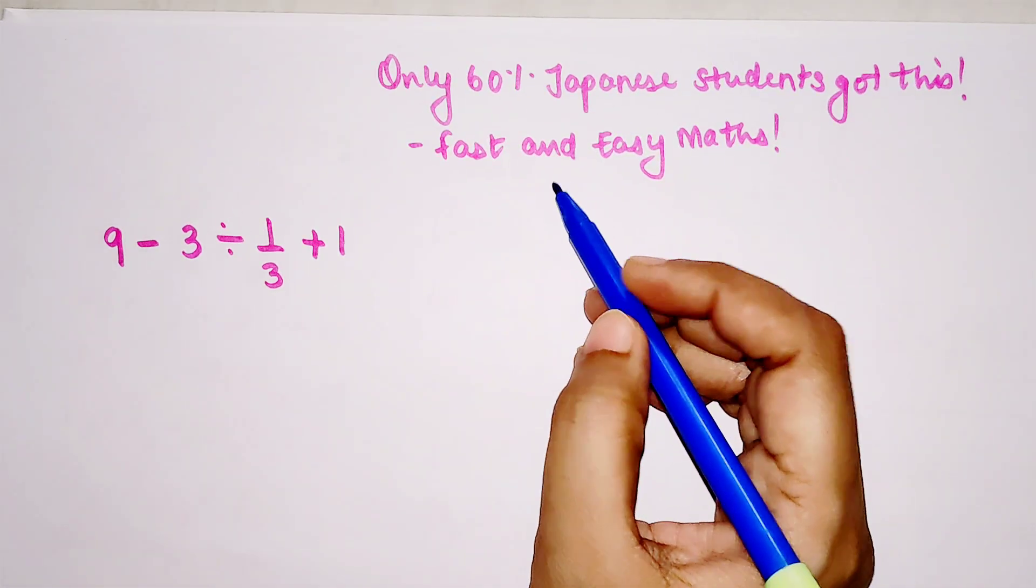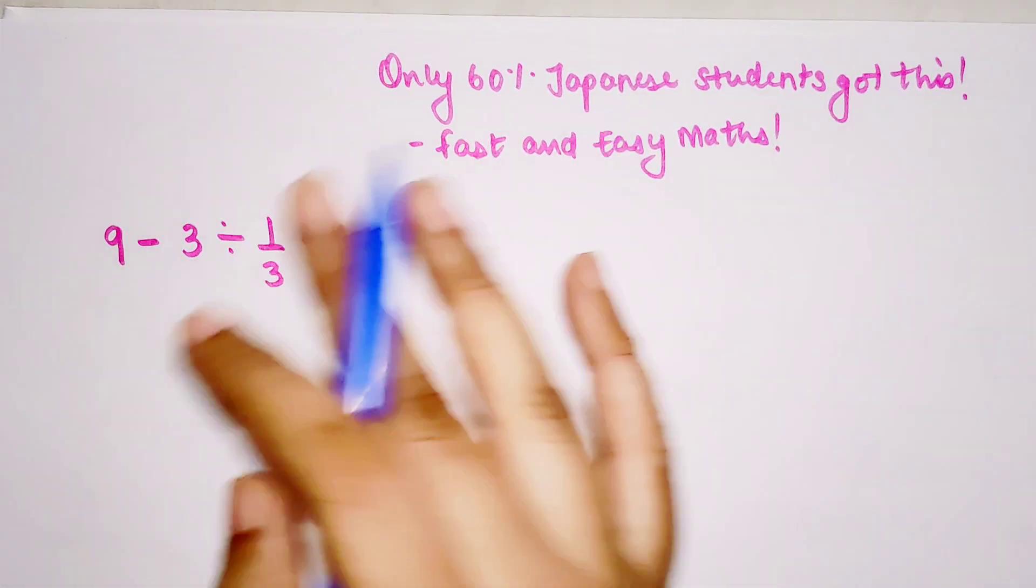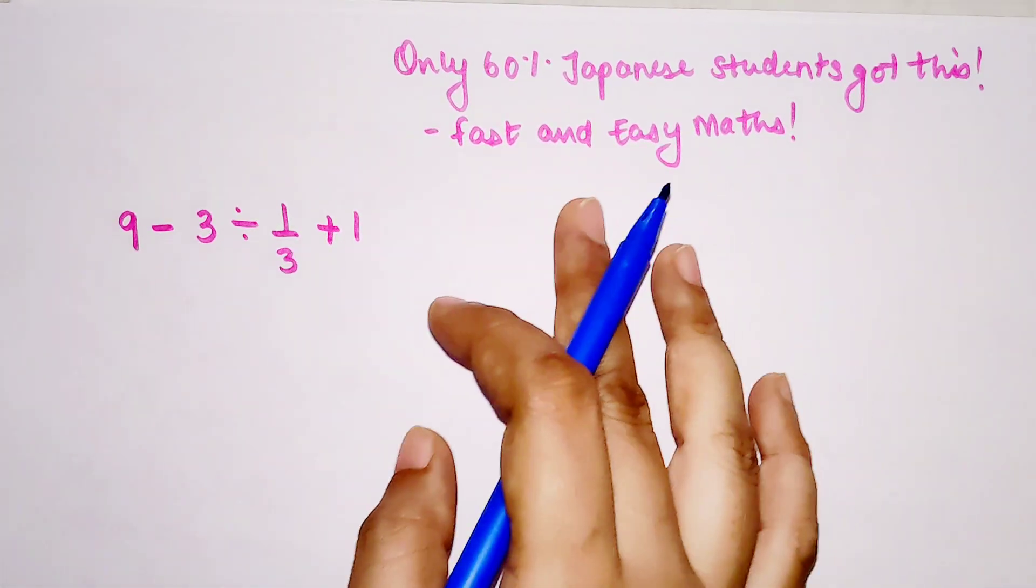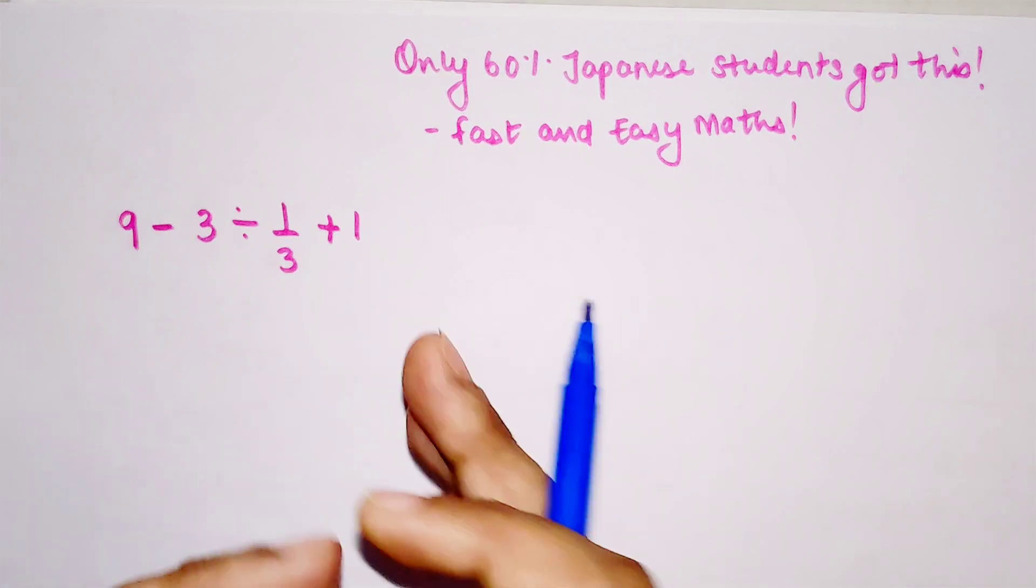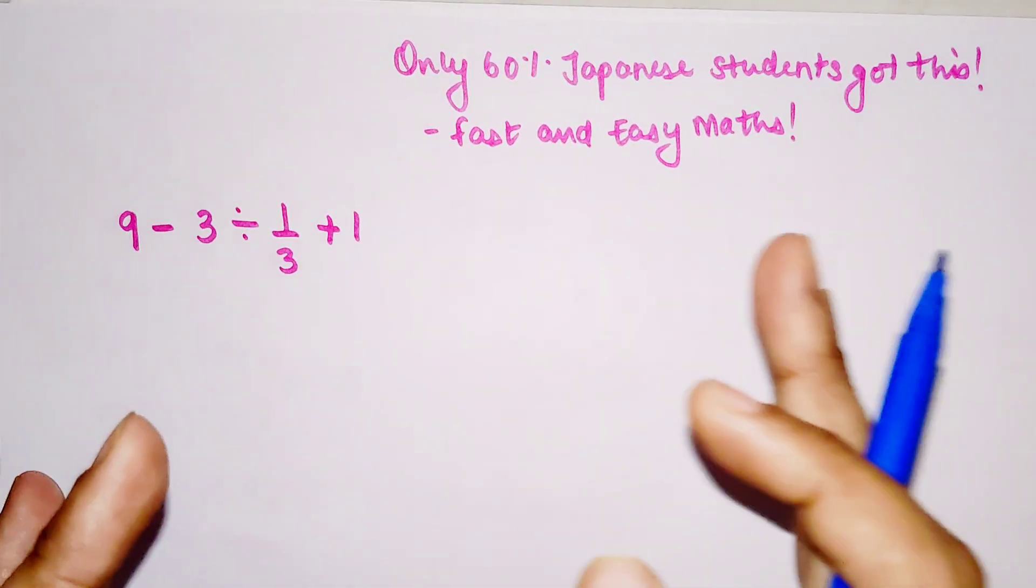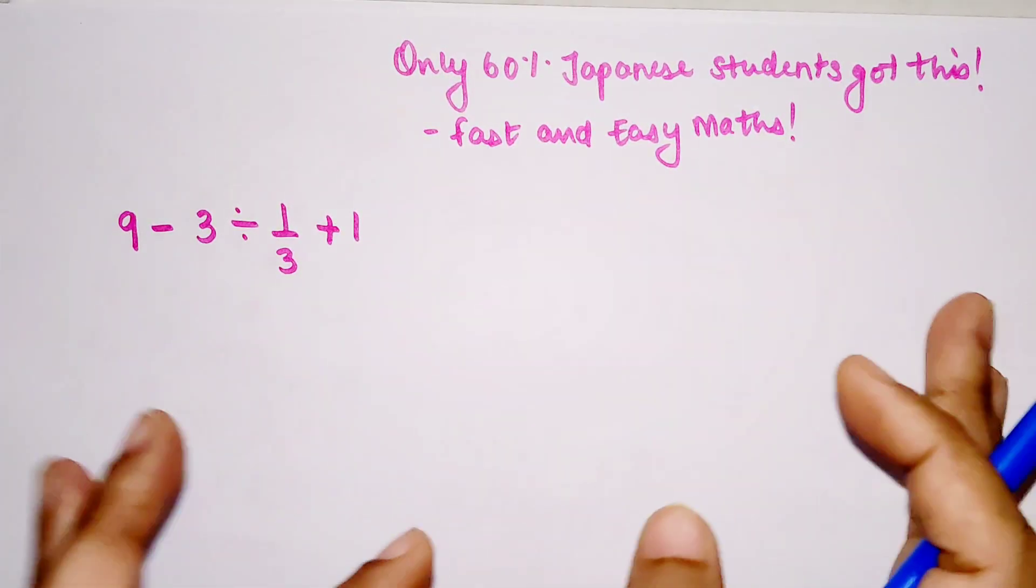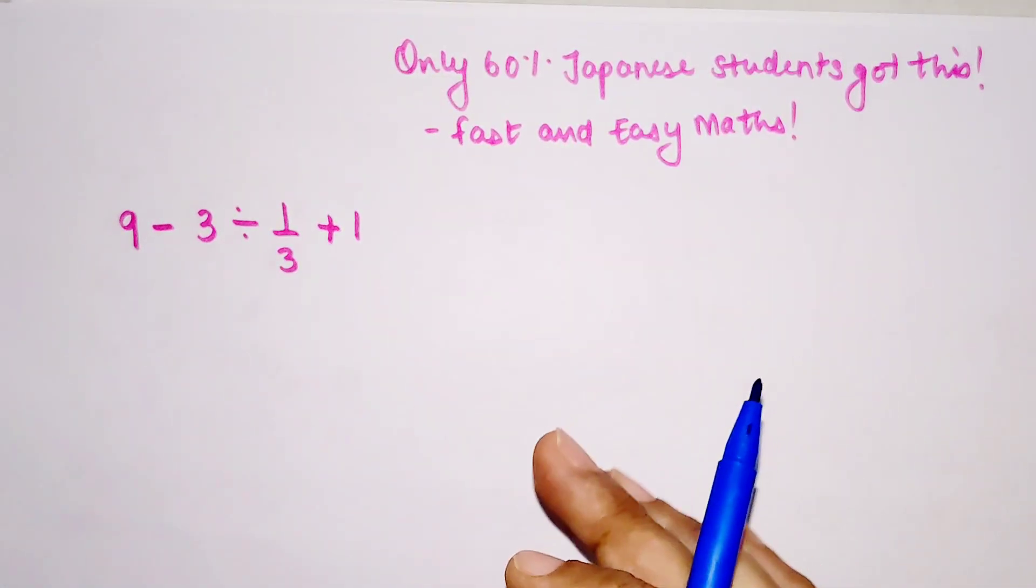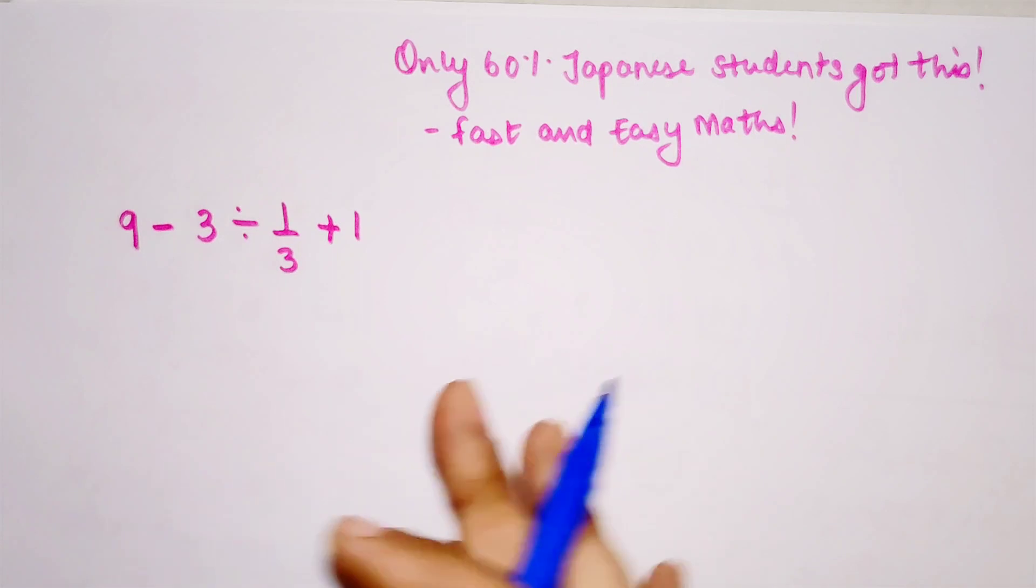Welcome everyone to my channel, Fast and Easy Math, which is dedicated to give you tips and tricks related to mathematics. Today I'm going to solve an equation. Trust me, only 60 percent of Japanese students got this correctly, and I'll tell you why things went wrong.